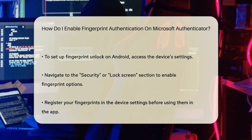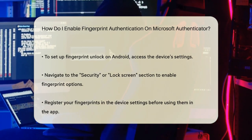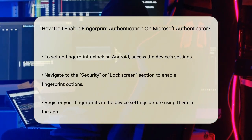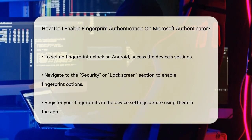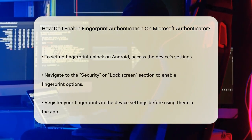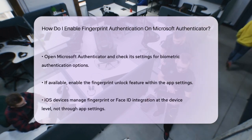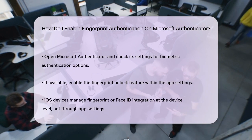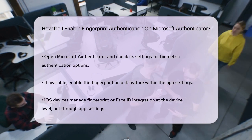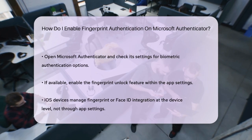To set up fingerprint unlock on your Android device for the app, you generally need to ensure that your device's fingerprint feature is enabled and set up. Go to your device's settings and navigate to the Security or Lock Screen section. Enable the fingerprint option and register your fingerprints. Open the Microsoft Authenticator app and go to its settings. Look for an option to enable biometric authentication or fingerprint unlock.